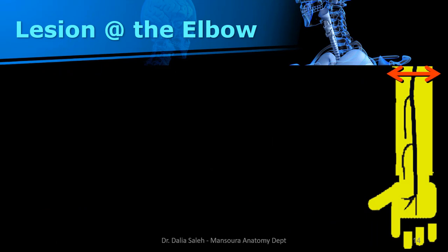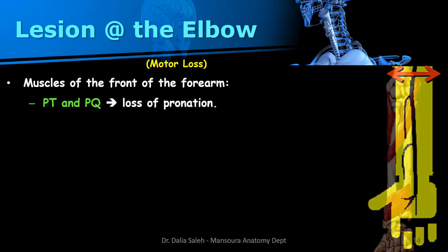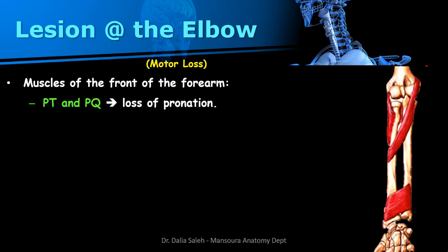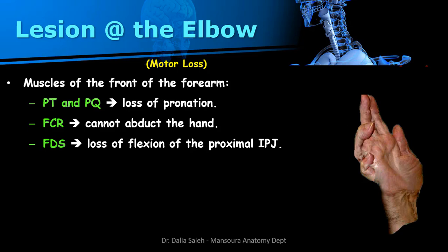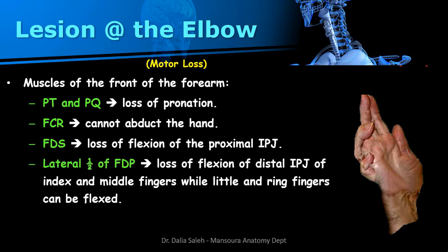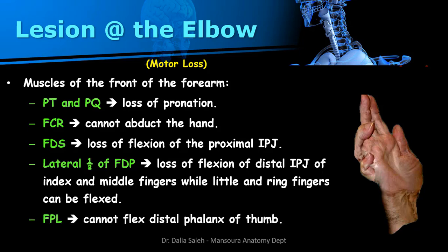If the lesion is at the level of the elbow, all branches of the median nerve will be affected. Motor loss includes: paralysis of pronator teres and pronator quadratus, causing loss of pronation with the forearm kept in supination; paralysis of flexor carpi radialis, causing the hand to be adducted with ulnar deviation; paralysis of flexor digitorum superficialis, causing loss of flexion of the proximal interphalangeal joints; and paralysis of the lateral half of flexor digitorum profundus, causing loss of flexion of the distal interphalangeal joints of the index and middle fingers. The flexor pollicis longus is also paralyzed, so the patient cannot flex the distal phalanx of the thumb.